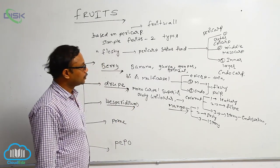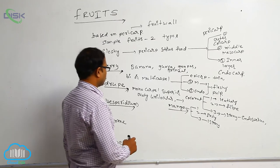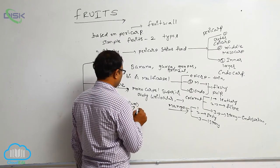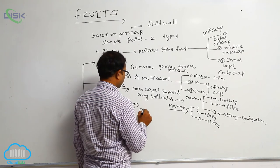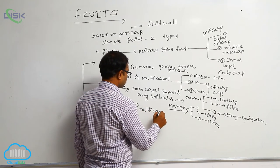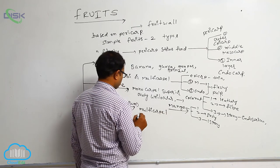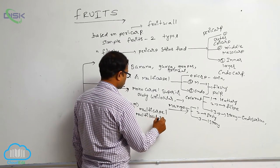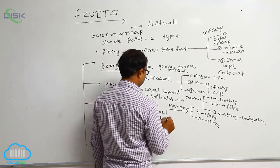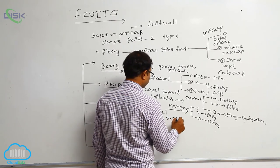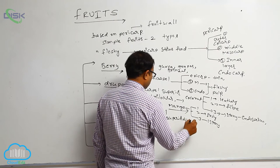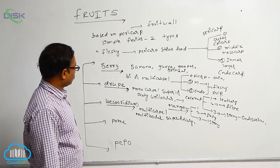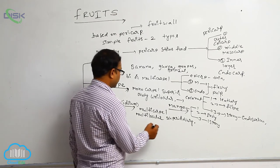Hesperidium is formed from a multicarpel, multilocular, superior ovary. The pericarp is divided into three layers: epicarp, mesocarp, and endocarp — that is known as the hesperidium.